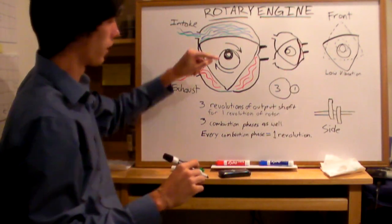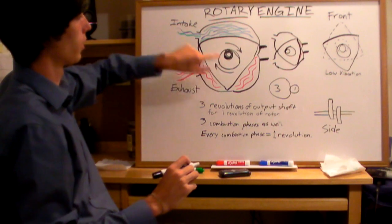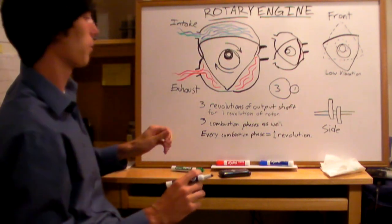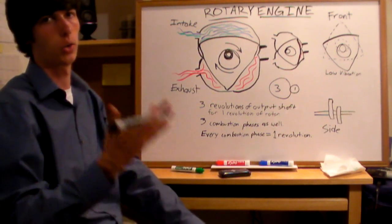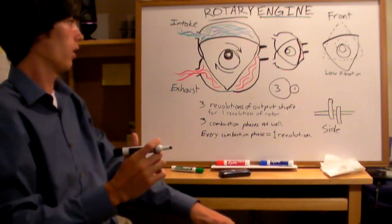Another thing to keep in mind, there are three combustion phases per revolution of the rotor. That means for every combustion phase, you have one revolution of the crankshaft.